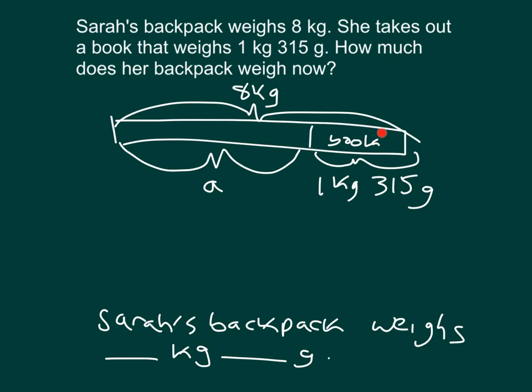And then how would I solve for that? Looks like I would take 8 kilograms and I would subtract 1 kilogram, 315 grams. Let's rename these into grams. I cannot just go 8 minus 1 being 7, and then call this 7 kilograms, 315 grams. Because what I'm really doing is I'm going 8 kilograms minus 1 kilogram, which is 7 kilograms, but then I'm also subtracting that 315 grams. Let's rename this all into grams.